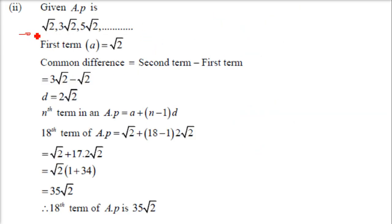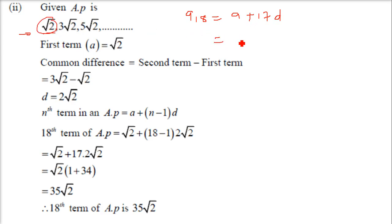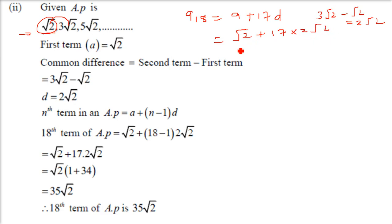Here we have the next AP. The first term A is root 2. We have to find the 18th term. So A18 equals A plus 17D, using A plus N minus 1 into D with N equal to 18. A is root 2, so it is root 2 plus 17 into D. D is 3 root 2 minus root 2, which is 2 root 2. Taking root 2 common: 1 plus 17 times 2 is 34, and 34 plus 1 is 35. So the 18th term is 35 root 2.